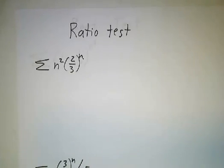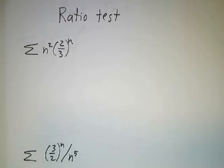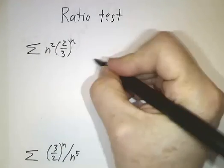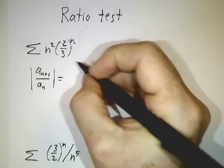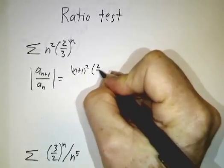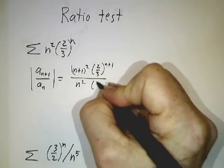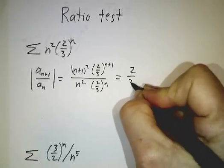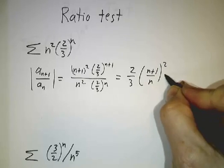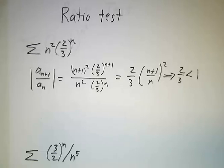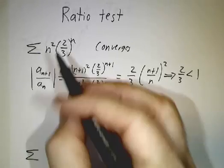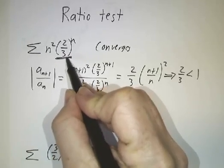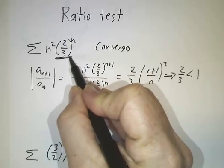Our last two tests are the ratio test and the root test — both essentially comparisons to exponentials. Applying the ratio test to the first series: a_{n+1} over a_n equals (n+1)² times (2/3)^{n+1} divided by n² times (2/3)^n. That simplifies to (2/3) times ((n+1)/n)², which approaches 2/3, which is less than 1. So this series converges. The factors of n² really just come along for the ride.